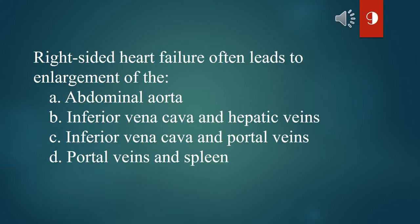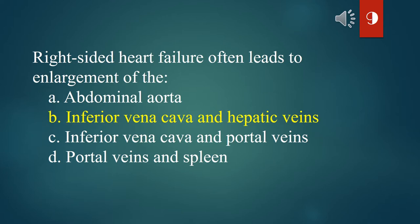Right-sided heart failure often leads to enlargement of the: A. Abdominal aorta. B. Inferior vena cava and hepatic veins. C. Inferior vena cava and portal veins. D. Portal veins and spleen. The answer is B. Inferior vena cava and hepatic veins.